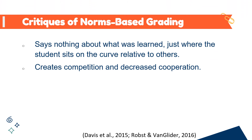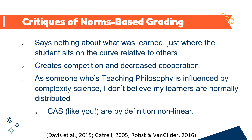This is extremely problematic for anyone whose teaching philosophy values social interaction and collectives, such as those inclined towards social constructivism, communities of practice, or complexity science. As someone whose teaching philosophy is influenced by complexity science, I just don't believe my learners are normally distributed. I believe my learners are complex adaptive systems situated within micro-macrosystems. Complex adaptive systems, as we'll discuss in module 5, are by definition non-linear, and their non-linear interactions give rise to complex behaviors — making it extremely difficult, if not entirely impossible, to make accurate predictions. Just as normal distributions can turn healthy people into patients, I worry they can do the same for my students.